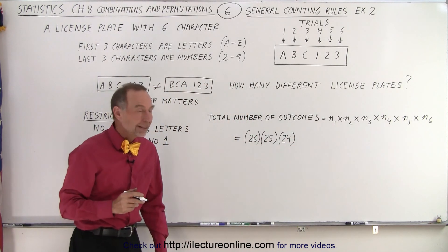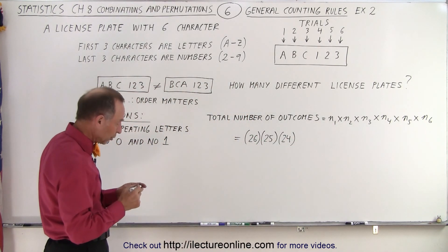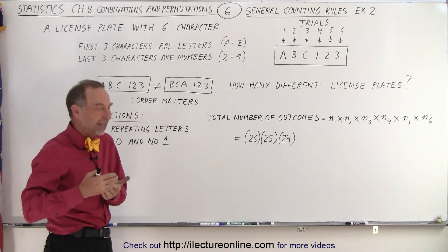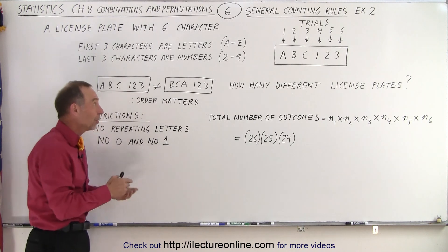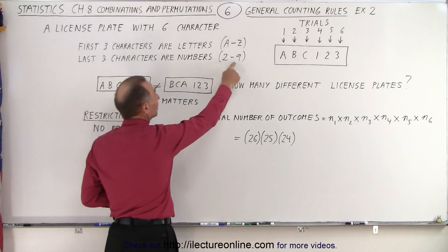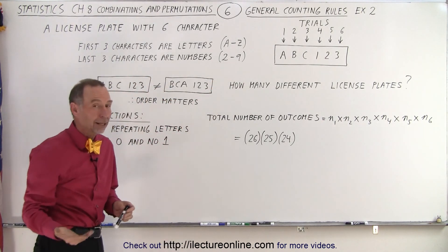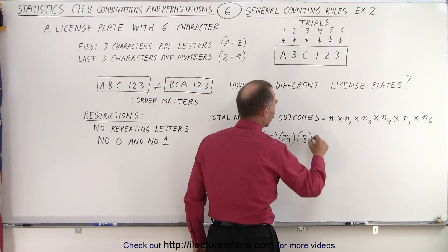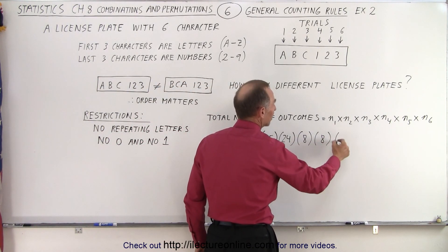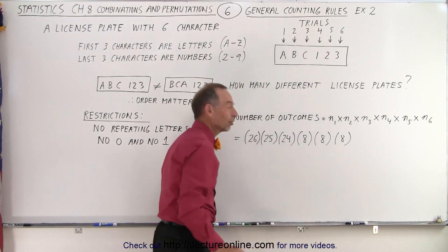How about the numerical characters? Well, there's no restriction. We can use the same number more than once. However, we cannot use 0 and 1. That means we can only pick numbers from 2 to 9. That means there's only 8 outcomes for the numbers. Which means for trial number 4 there's 8 outcomes. Trial number 5 there's 8. And trial number 6. There are 8 outcomes.